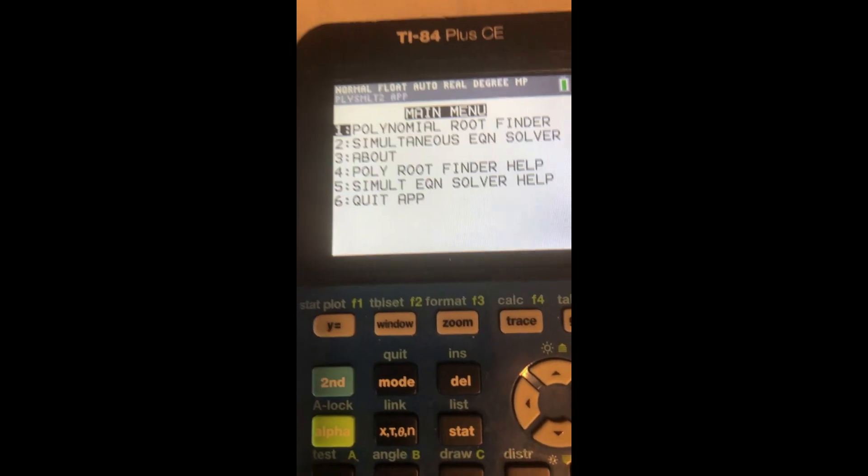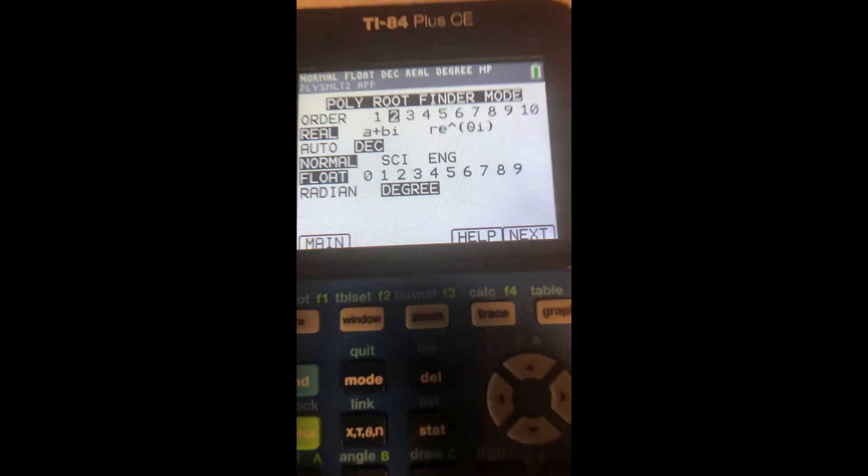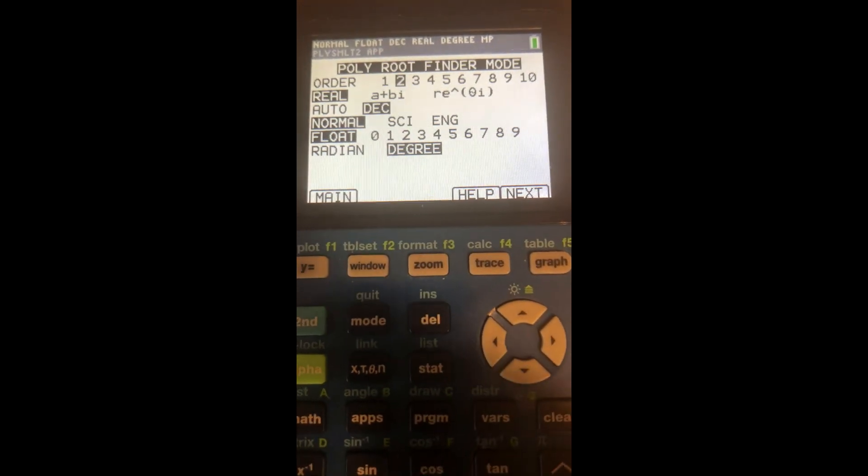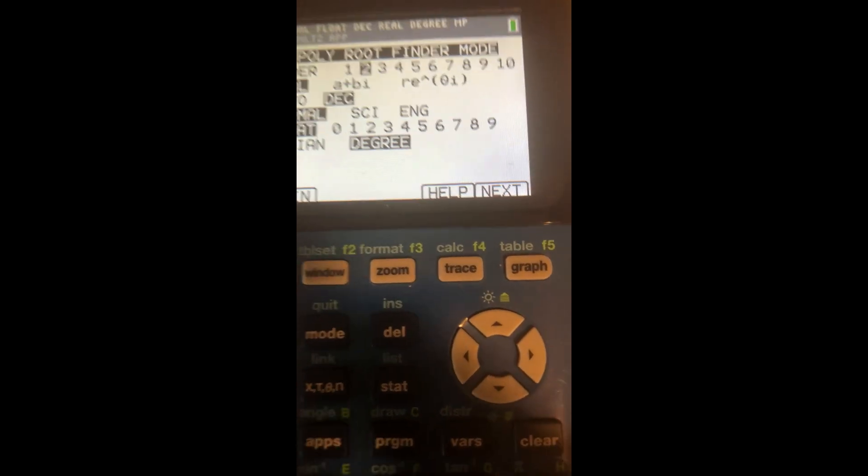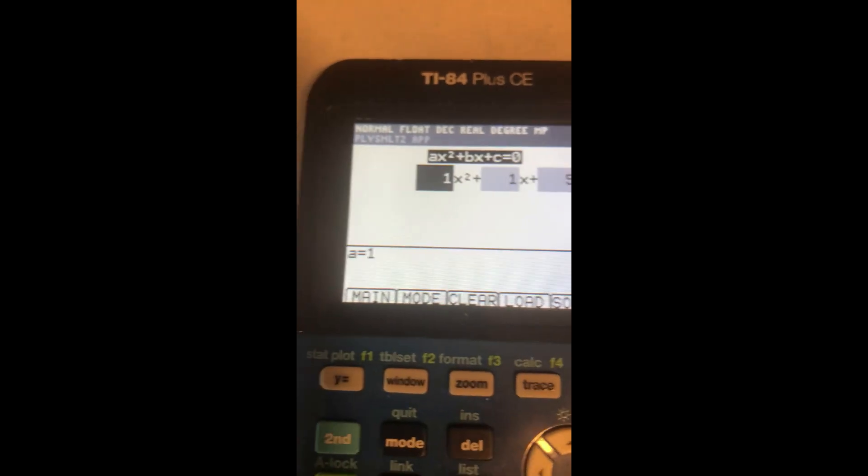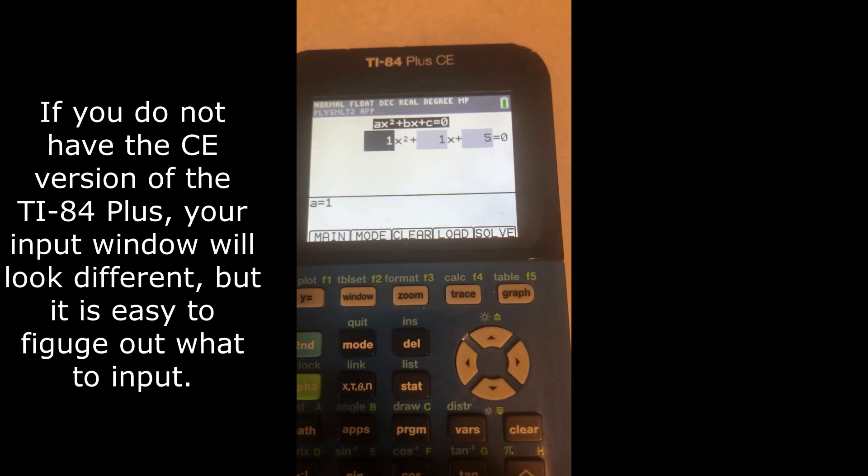I'm going to press 1. Now this is the standard page, it's already set as default, so I just want to press next by pressing the graph button. And then all I have to do is enter the equation one step at a time.